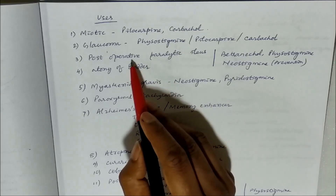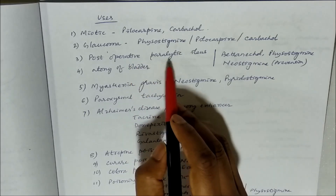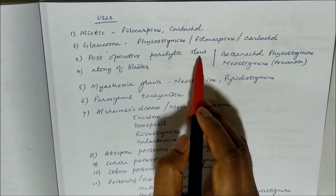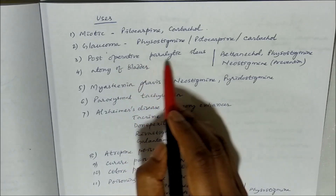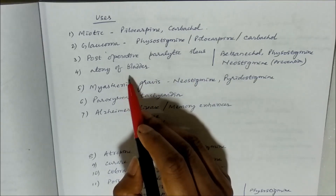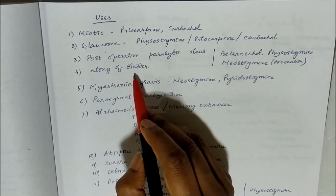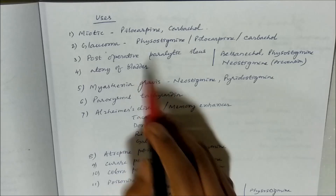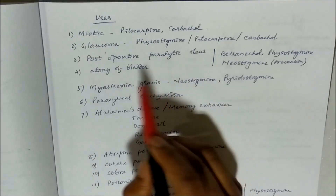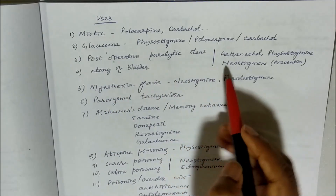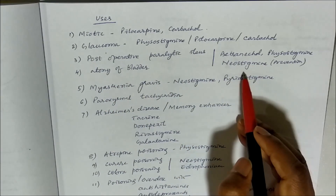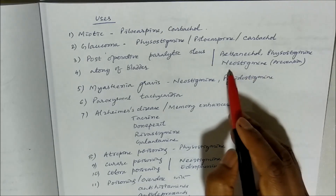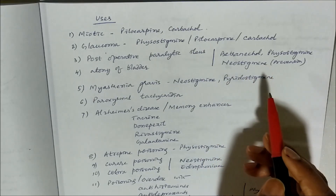These drugs also cause smooth muscle contraction of the ileum, so they can be used in post-operative paralytic ileus. They also contract the smooth muscles of the urinary bladder, so they can be used in atony of the bladder. For these purposes, drugs like bethanechol and neostigmine can be used prophylactically.